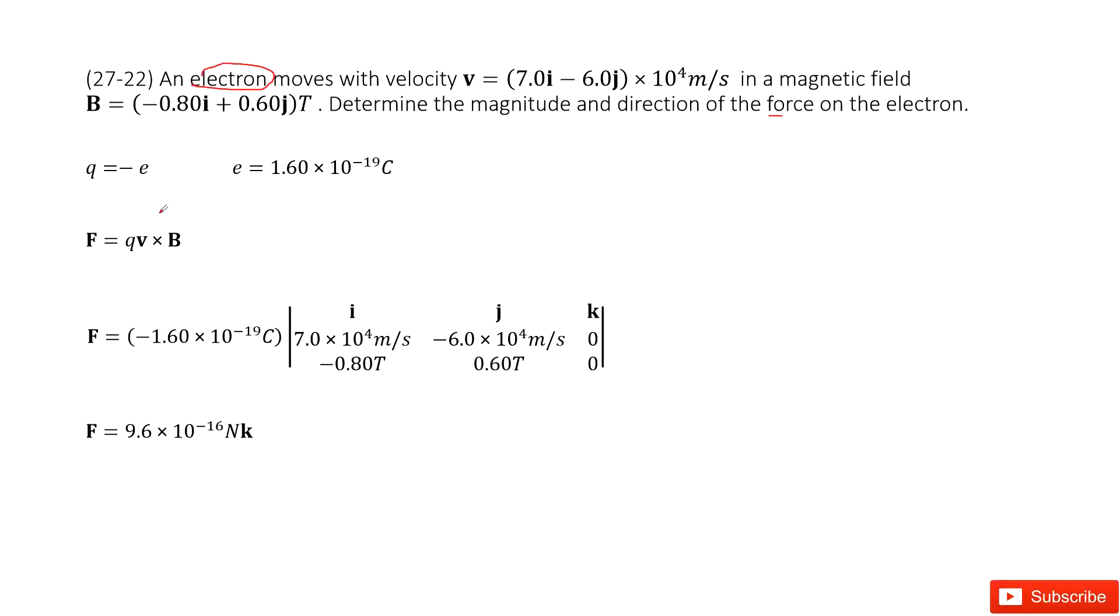V input given quantities. So in this one, the cross operation, you can write it in this matrix. I, J, K.